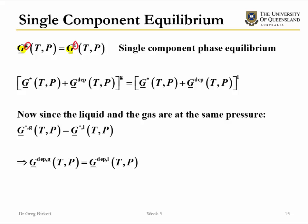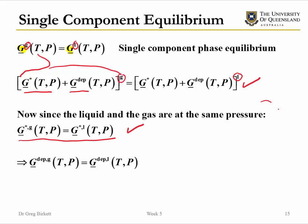Instead of just looking at Gibbs free energy, we can break this down into ideal gas contributions to the Gibbs free energy and departure contributions to the Gibbs free energy — for the gas and for the liquid. Since the gas and the liquid are at the same temperature and pressure, we would expect the ideal gas contribution to the Gibbs free energy for the two phases to be the same. It then follows that the departure Gibbs free energy of the gas phase and of the liquid phase must be equal as well.